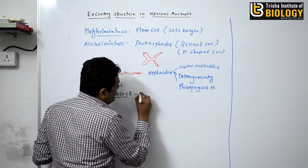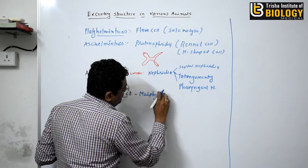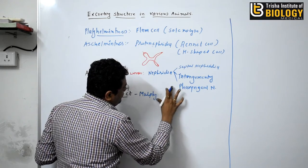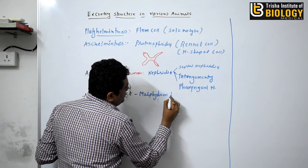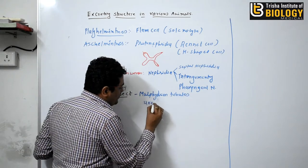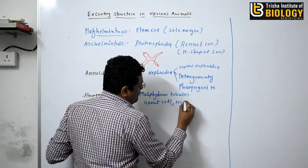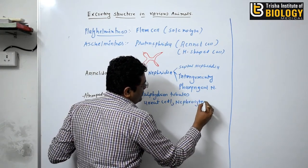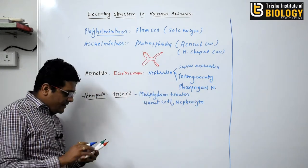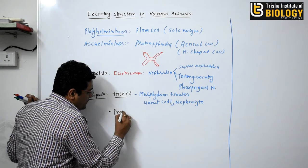In Arthropoda, insects possess the Malpighian tubules. They also possess the urate cell and the nephrocyte. So insects have Malpighian tubules, urate cells, and nephrocytes.